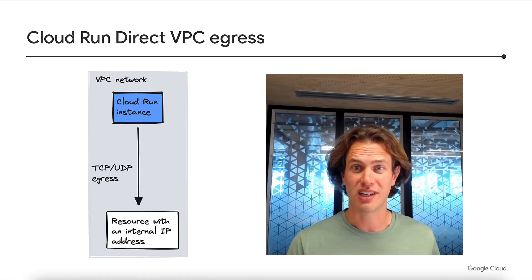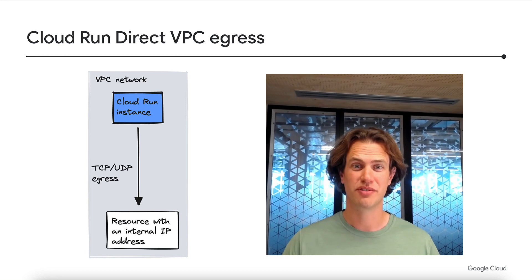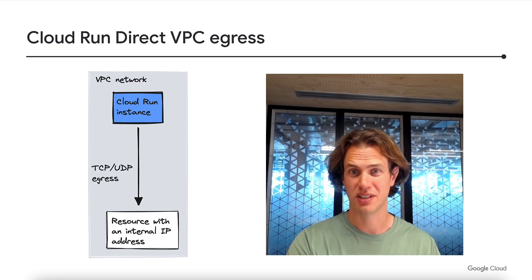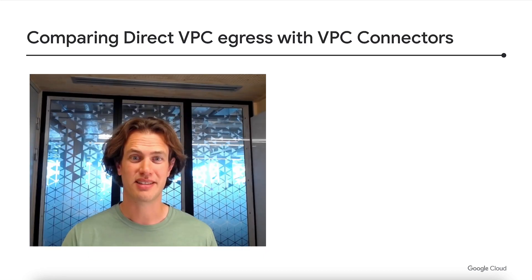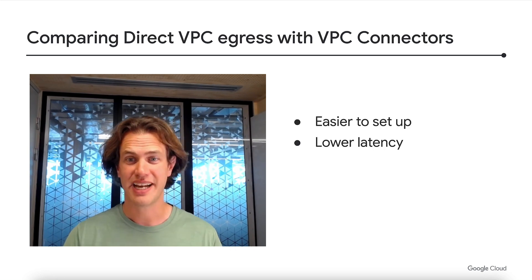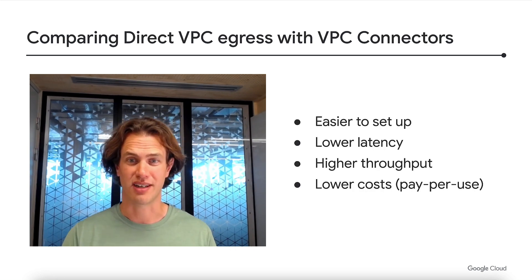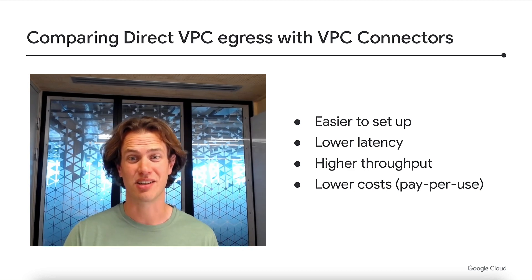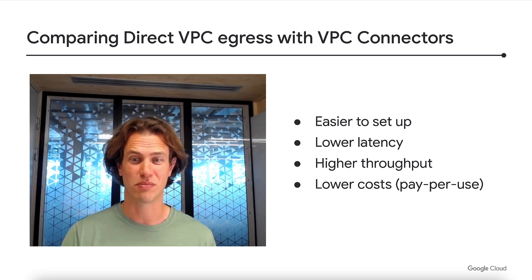Direct VPC egress on Cloud Run enables you to send traffic to a VPC network without setting up a serverless VPC access connector. It's easier to set up, faster, can handle more traffic, and has lower costs. This is a very exciting update to Cloud Run. Let's dive in to learn more.